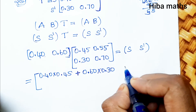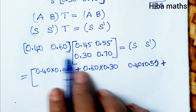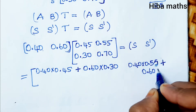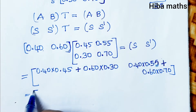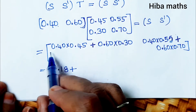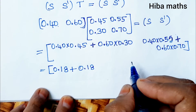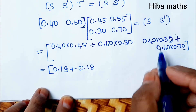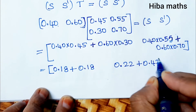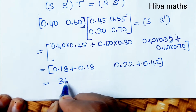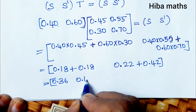Calculating: 0.40 into 0.55 plus 0.60 into 0.70. Solving: 0.18 plus 0.18 equals 0.36, and 0.22 plus 0.42 equals 0.64.